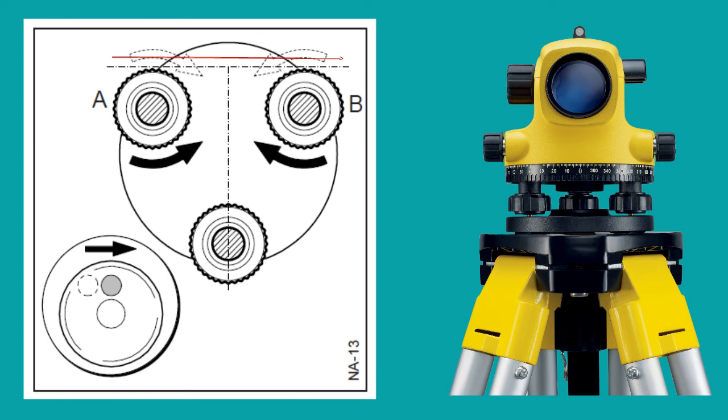Keep the telescope parallel to any two foot screws as shown on the picture, and adjust both the foot screws either inward direction or outward direction until the level bubble come at the center.